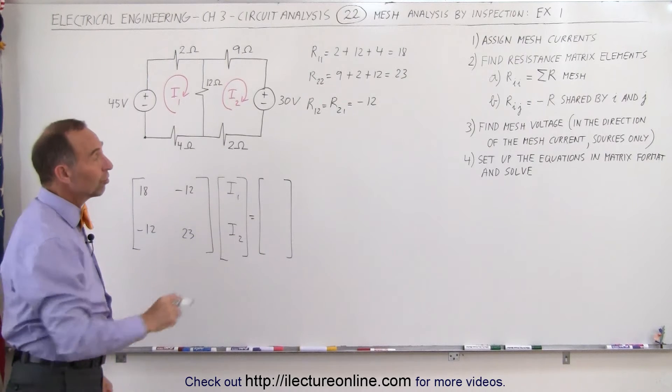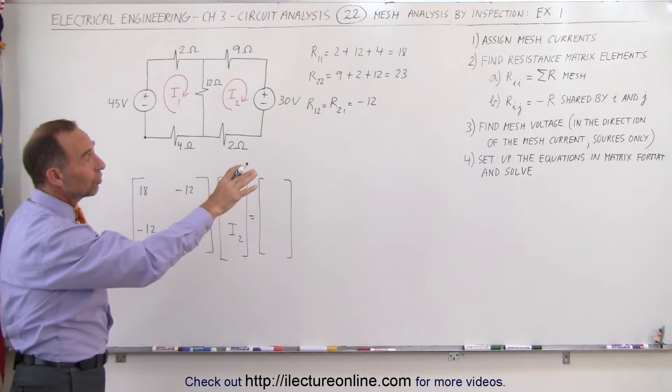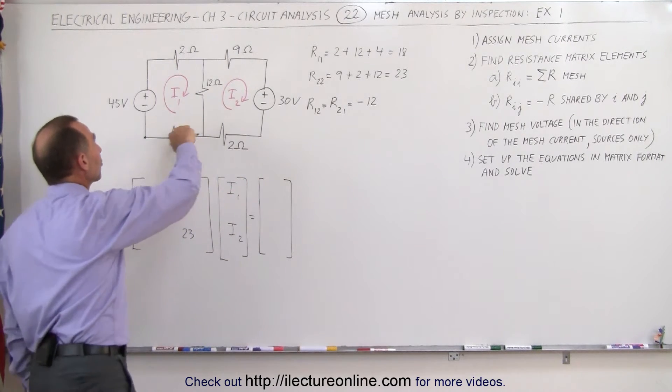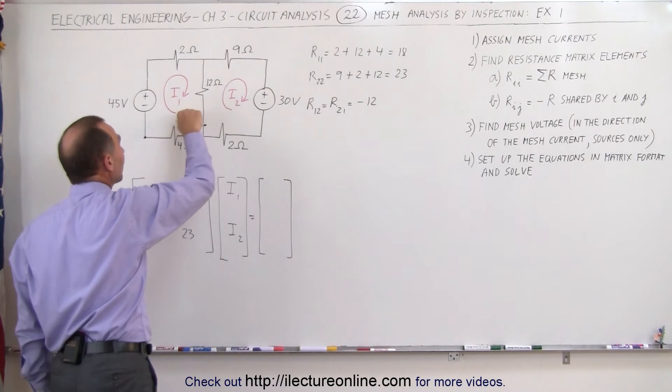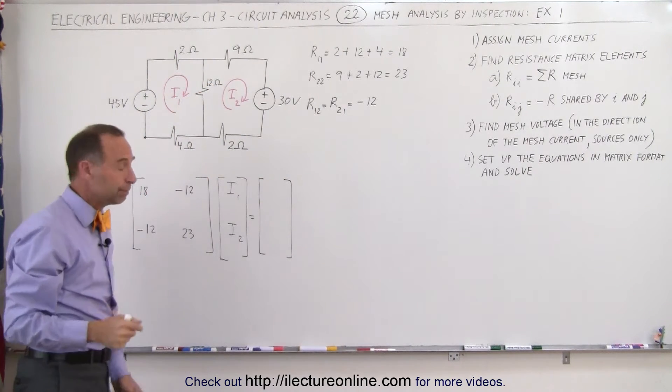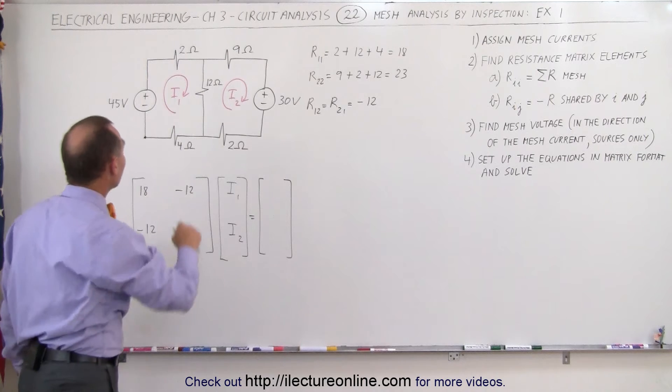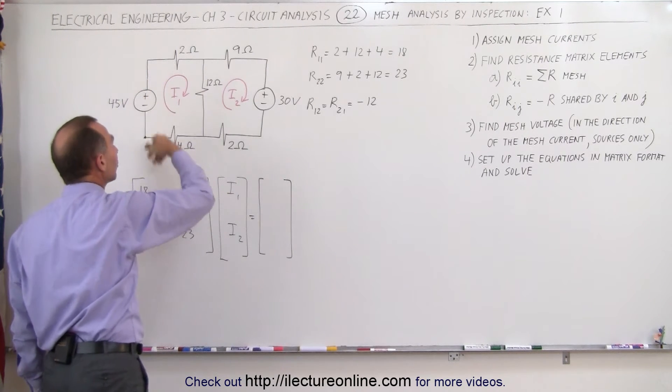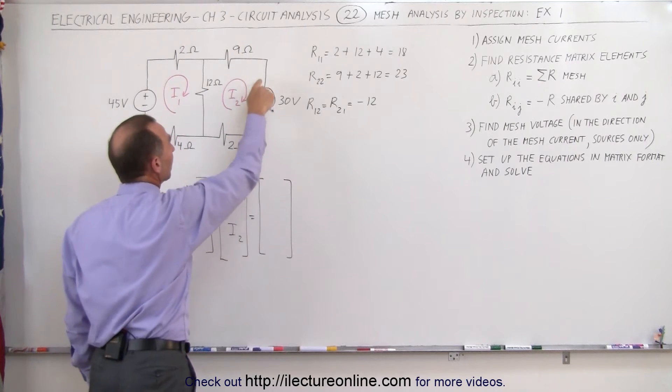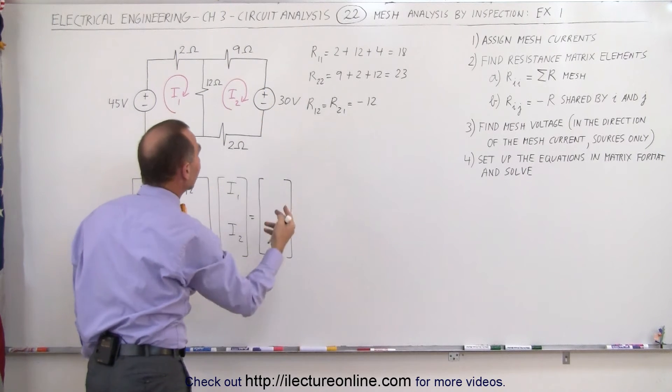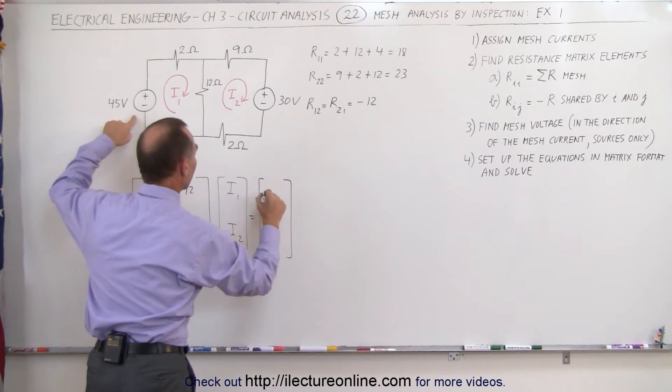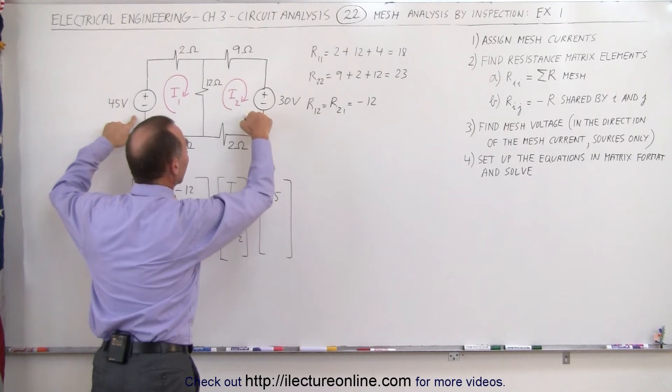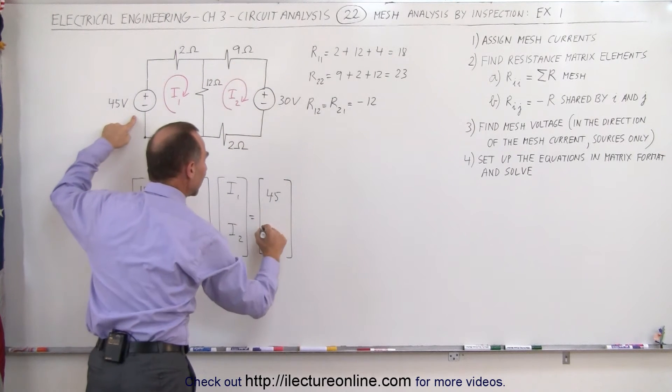Now we still need to get the voltages. In order to find the mesh voltages, what we need to do is travel around each of the meshes in the same direction as the current, the way we drew it. If we go across the voltage source from the negative to the positive end, that's a positive voltage. If you go across the voltage from the positive end to negative end, that is a negative voltage. So for the first mesh we get a positive 45, but for the second mesh we get a negative 30.